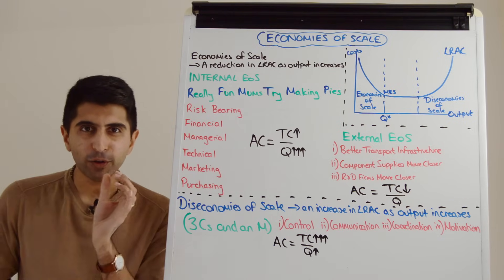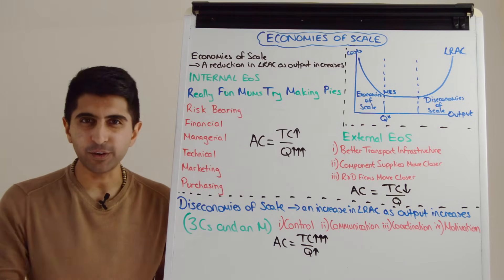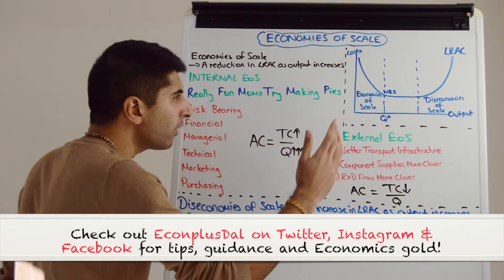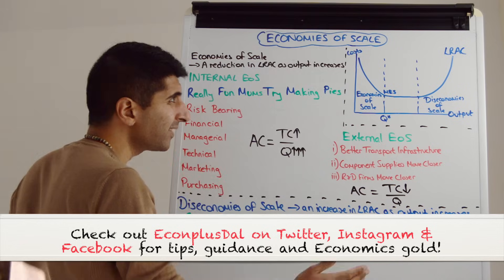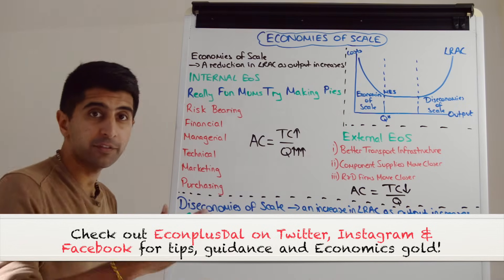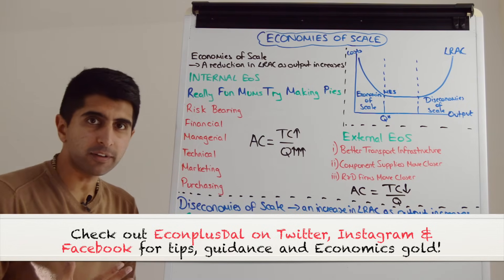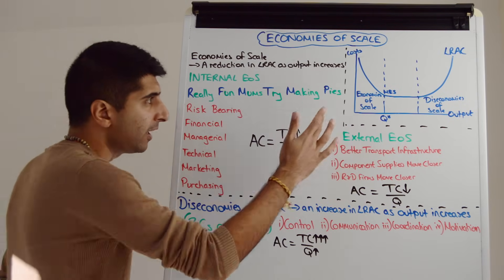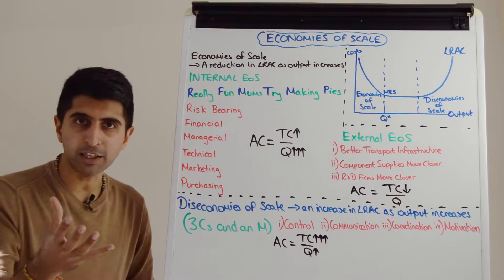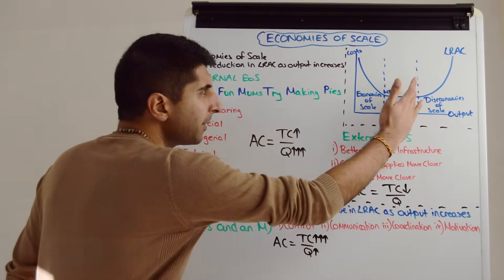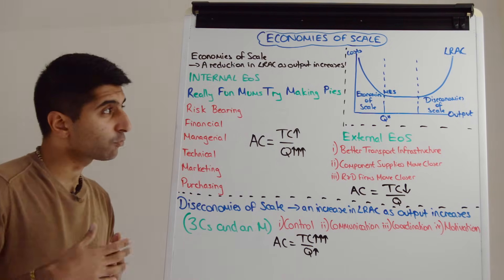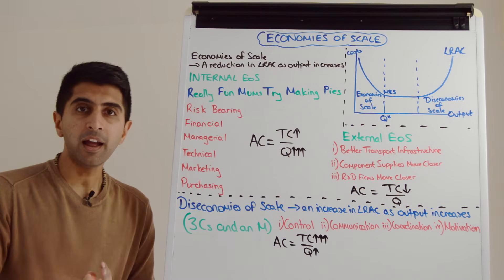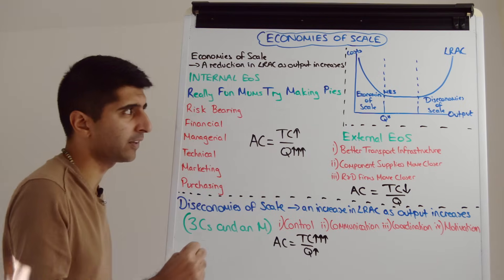Hi everybody, welcome to this video looking at economies and diseconomies of scale. From my last video we said that the long-run average cost curve looks like this. Where the long-run average cost curve is falling, we said there are increasing returns to scale and the reason a firm can benefit from increasing returns to scale is because they may be experiencing economies of scale. But where that long-run average cost curve is rising, a firm is experiencing decreasing returns to scale and that could be because they're suffering from diseconomies of scale.